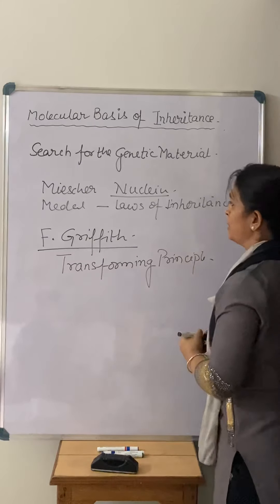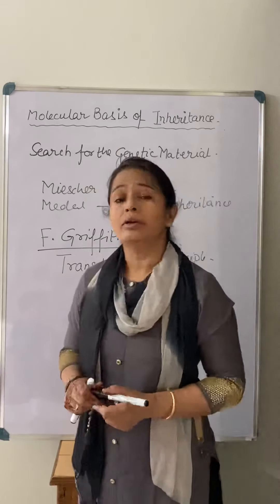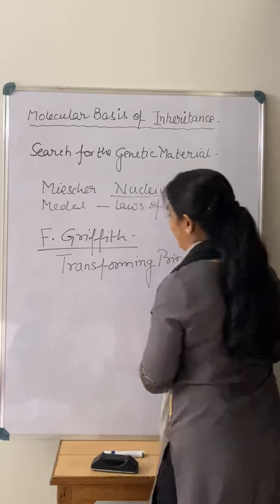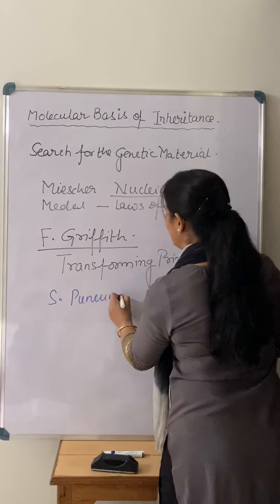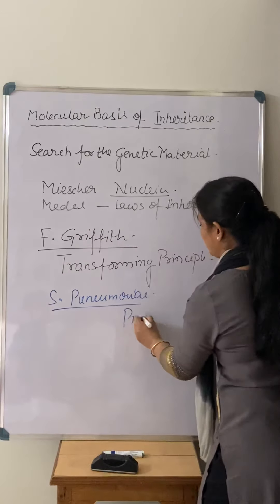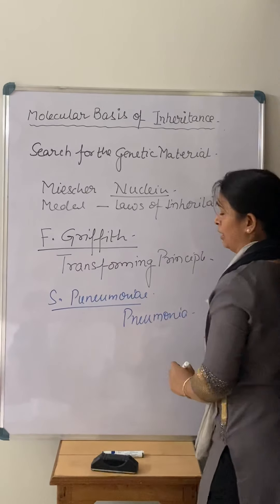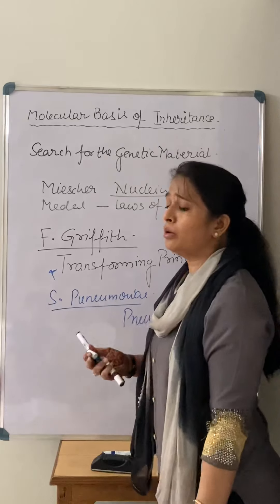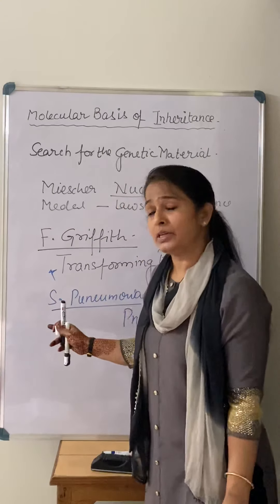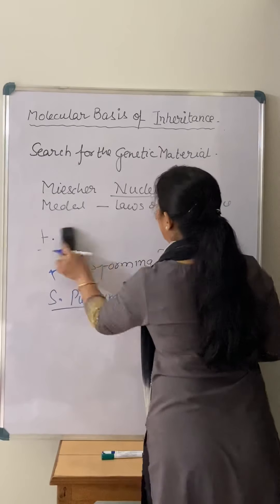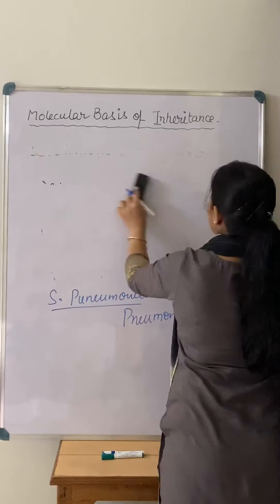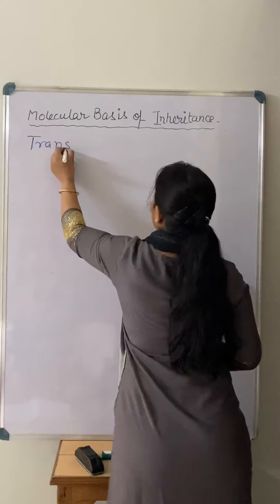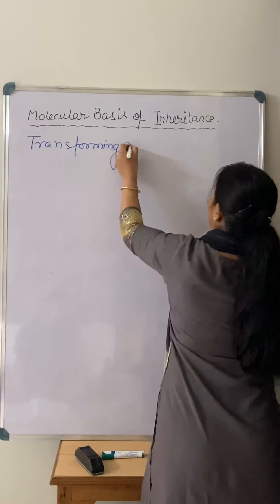In the Transforming Principle experiment, Griffith took a bacteria named Streptococcus pneumoniae — a bacteria responsible for the disease pneumonia, making it a pathogenic bacteria. He grew a number of strains of this bacteria in an artificial culture medium and cultured them in different conditions.